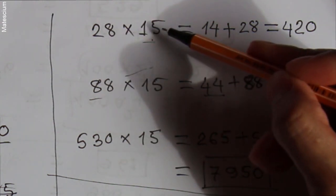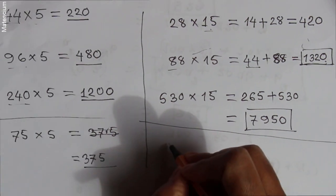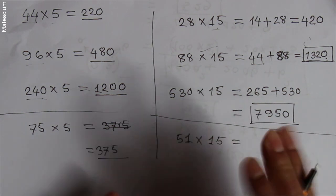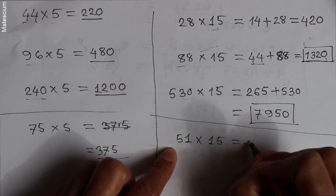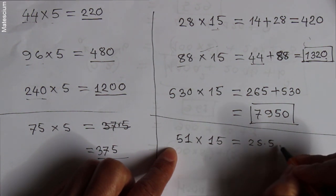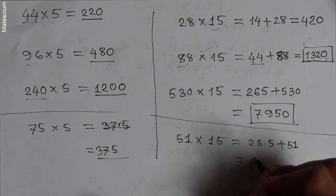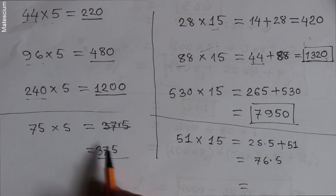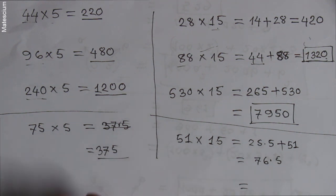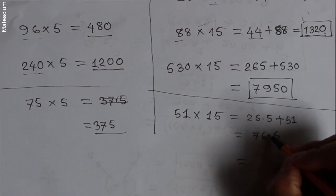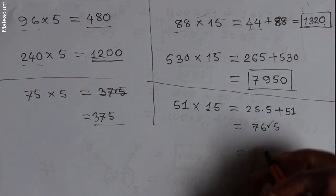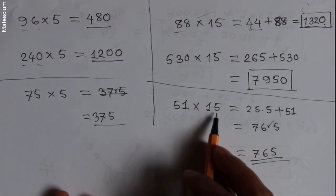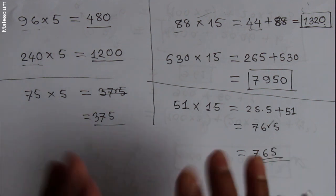Now let's consider an odd number: 51 multiplied by 15. Do the same thing — half of 51 is 25.5, plus 51 equals 76.5. As I told you before, for odd numbers, whenever there is a decimal point, just remove the point and write all the numbers simply: 765. This is the answer of 51 times 15.